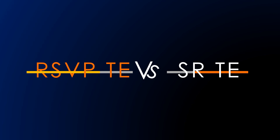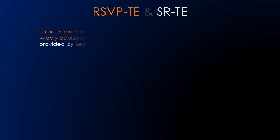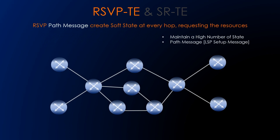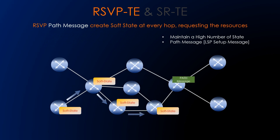Now we will see RSVP-TE versus SR-TE. Traffic engineering and fast reroute are the main reasons RSVP-TE is deployed in the network. Segment routing improves traffic engineering scalability and flexibility while addressing SDN requirements driving its adoption. The classic MPLS-TE depends on signaling protocols such as RSVP to establish end-to-end tunnels with reserved resources, thereby complicating the control plane.